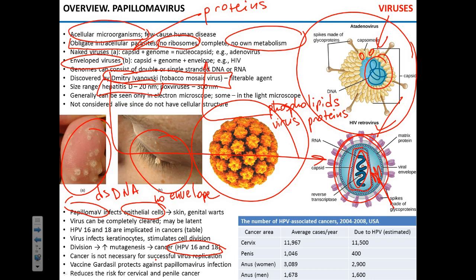The cancers associated with HPV are those of the stratified squamous epithelia: the cervix of the uterus — HPV is the leading cause of cervical cancer in the United States — penile cancer, anal cancer, vulvar cancer, and oropharyngeal cancers. It is a really important contributor to cancer deaths.